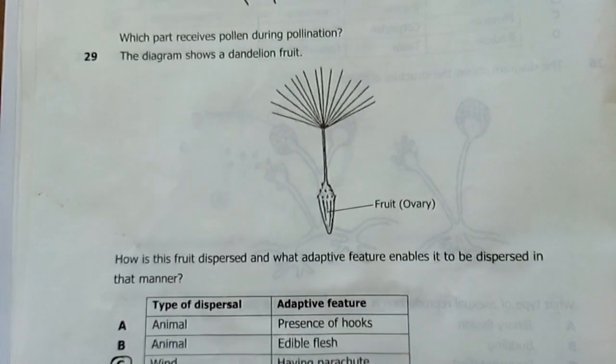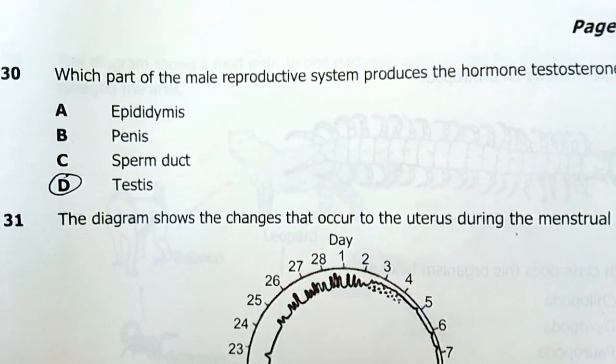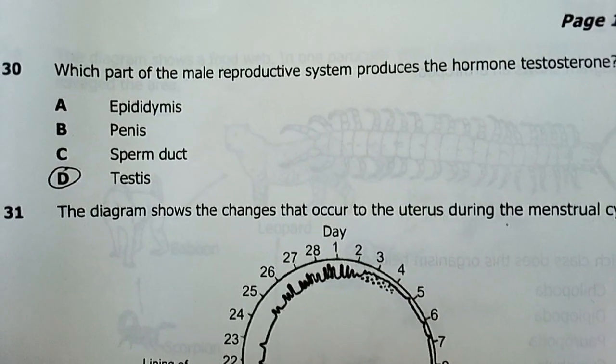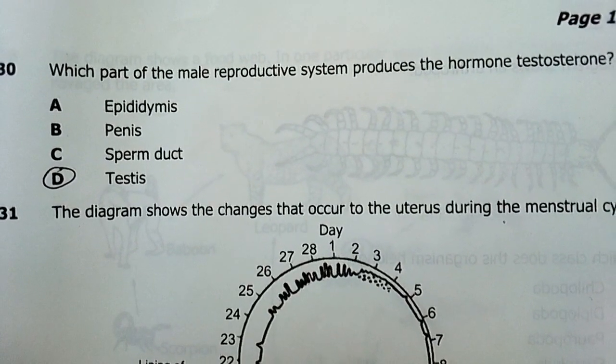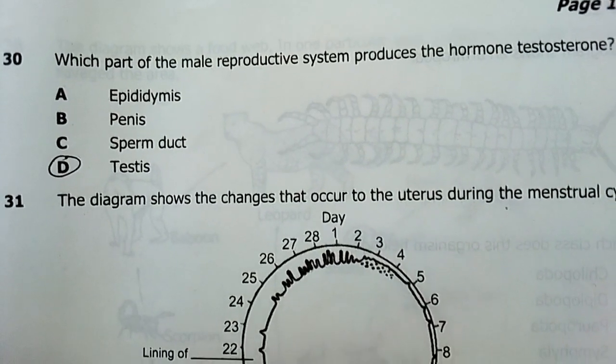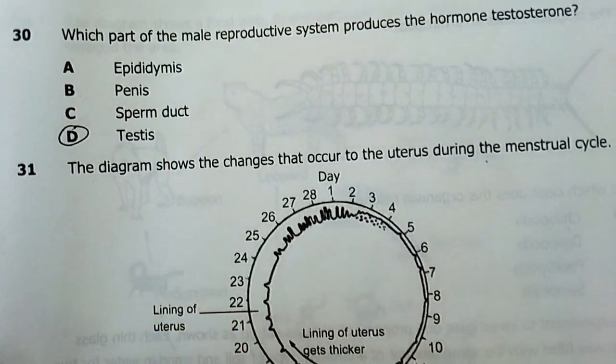Number 30, which part of the male reproductive system produces the hormone testosterone? That's the testis. Sperm duct? No, it's just a duct. Penis? No, that's just for delivery of semen. Epididymis? No, it's just also a duct where maturation and storage of semen takes place.